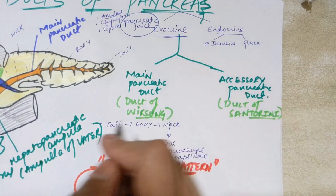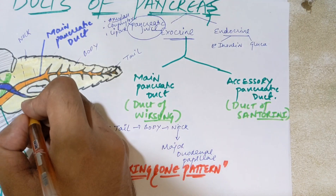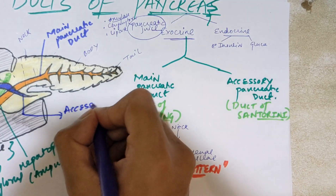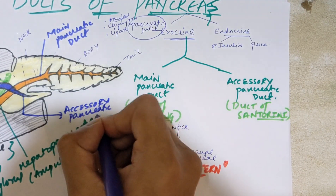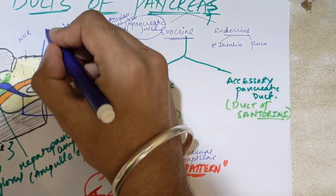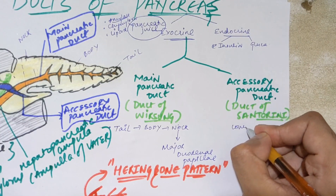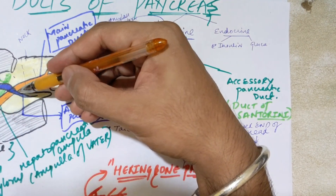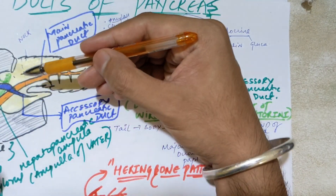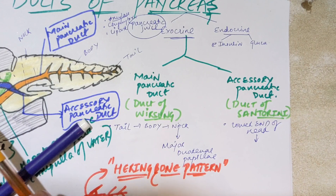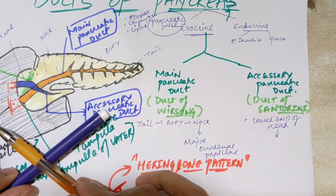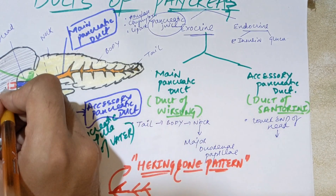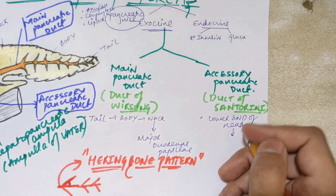Now moving to the duct of Santorini — the accessory pancreatic duct, shown in purple in the diagram. It begins from the lower end of the head of the pancreas, moves upward, and crosses from the anterior side over the main pancreatic duct. The accessory pancreatic duct is present just above the main pancreatic duct and crosses medially.